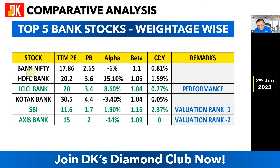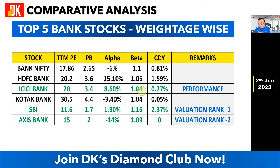HDFC Bank has a higher P/E and P/B ratio than Bank Nifty. It has underperformed the benchmark index Nifty 50 by 15.1%, with a beta of 1.06 and a dividend yield of 1.59%. ICICI Bank also has a higher P/E and P/B ratio compared to Bank Nifty, but in terms of performance it has outperformed the benchmark index Nifty 50 by 8.6%. Its beta is 1.04 — less volatile than Bank Nifty — and the dividend yield is 0.27%.